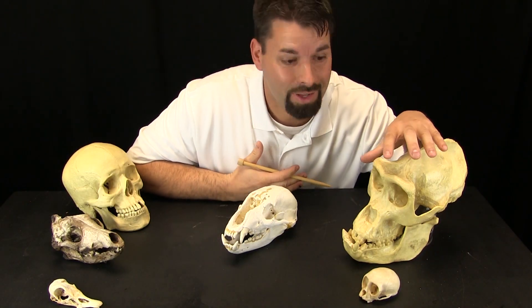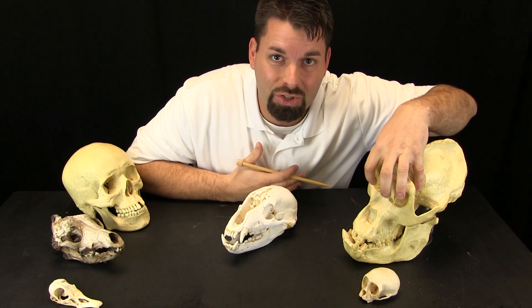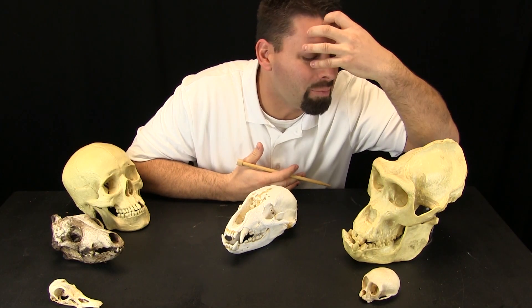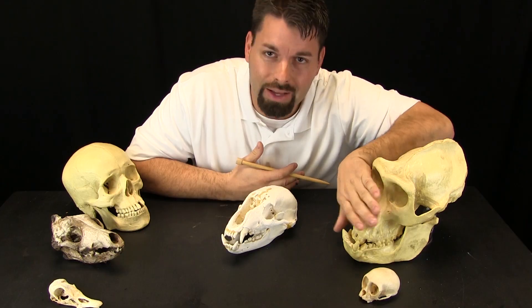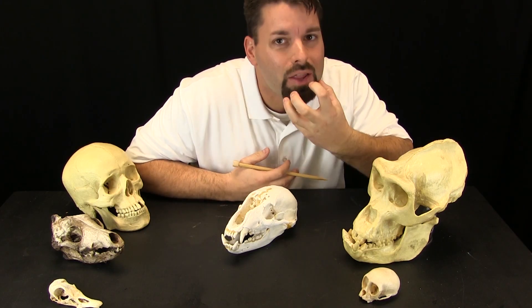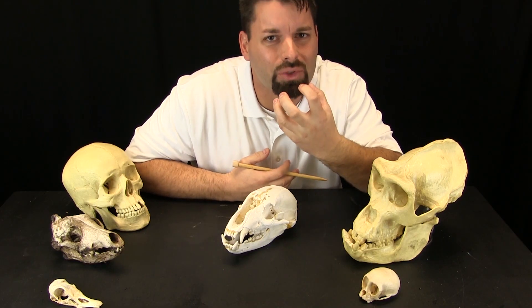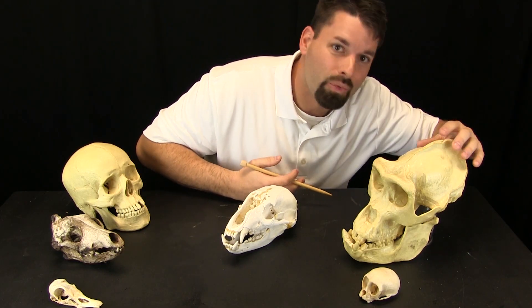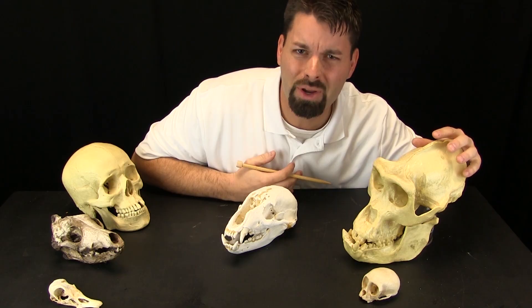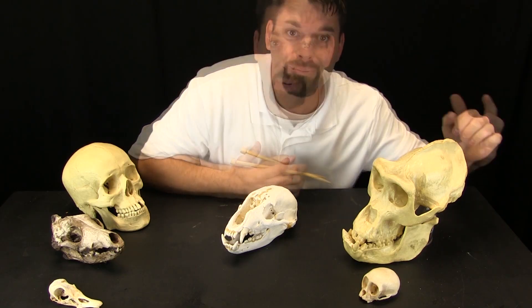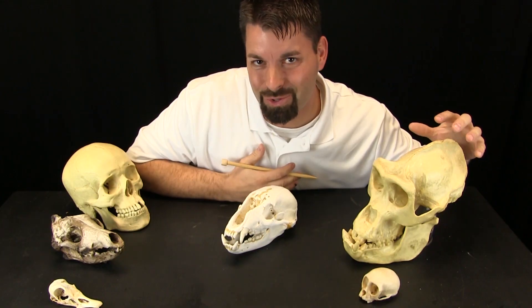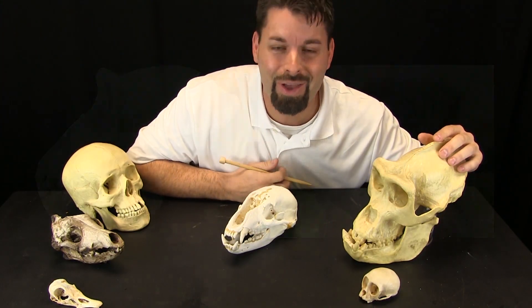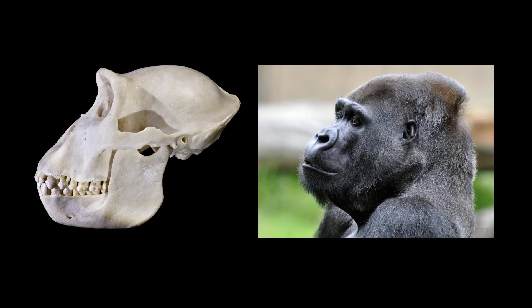Look at this skull. It has a big chunk of bone up here, a flatter spot down here where the bottom jaw sort of comes out, and a big ridge of bone up here. Bones give a shape. Take a look at this side by side comparison to find out that this skull is the skull of a gorilla.